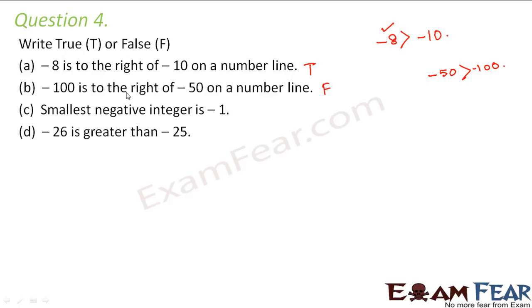Minus one hundred should actually lie to the left of minus fifty. 'Smallest negative integer is minus one' — this is also FALSE, because minus one is actually the biggest negative integer. As you move toward minus two, minus three, minus four, and so on, the overall value keeps decreasing. 'Minus twenty six is greater than minus twenty five' — this is also FALSE, because minus twenty six is less than minus twenty five.